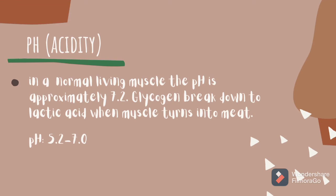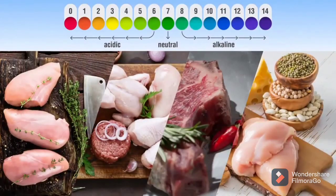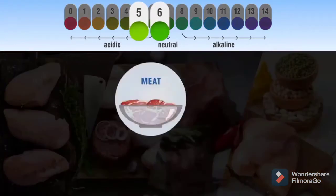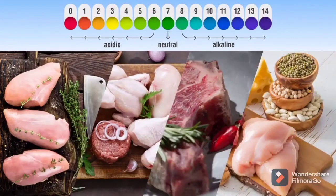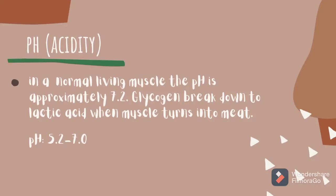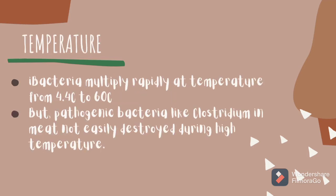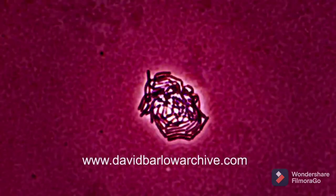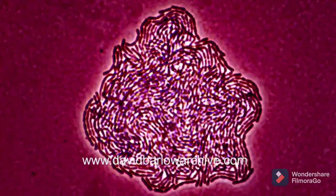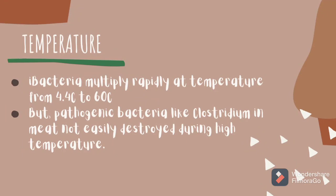In a normal living muscle, the pH is approximately 7.2, which is neutral. Glycogen breaks down to fatty acid when muscle turns into meat, so the pH of meat usually ranges from 5.2 to 7. For temperature factors, bacteria usually multiply repeatedly at temperatures from 4 to 60 degrees Celsius.